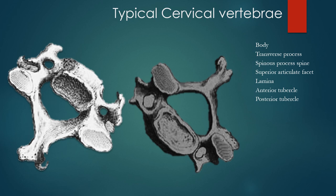I usually tell people to look at the lumbar vertebrae first — understand all the parts — because once you have the typical vertebra, you can see similarities everywhere. The lumbar has the body, spine, lamina, pedicle, transverse process, and inferior and superior articular facets. The cervical vertebra has a bifid spine (a spine that branches). It has holes on the transverse process called the transverse foramina. It also has an anterior tubercle and a posterior tubercle. So what makes the cervical different is the holes, the bifid spine, and the smaller size.